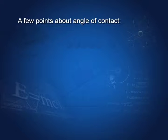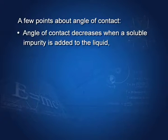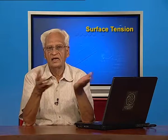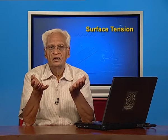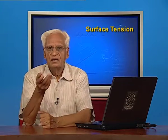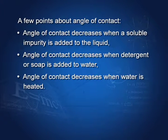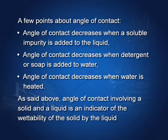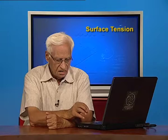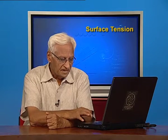The angle of contact decreases when a soluble impurity is added to water — say, you add salt or sugar which is soluble in water — then the angle of contact decreases. Angle of contact also decreases when water is heated. The angle of contact involving solids and liquids is an indicator of the wettability of the solid by the liquid.